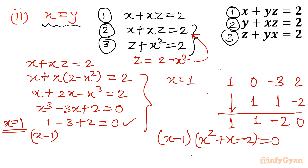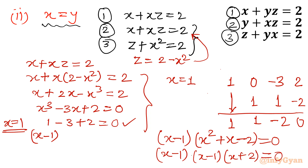Solving x squared plus x minus 2 equal to 0 gives factors x minus 1 times x plus 2 equal to 0. You can use the quadratic formula and get 1 and minus 2 as solutions. So the full factored form is x minus 1 squared times x plus 2 equal to 0, giving x equal to 1 or x equal to negative 2.